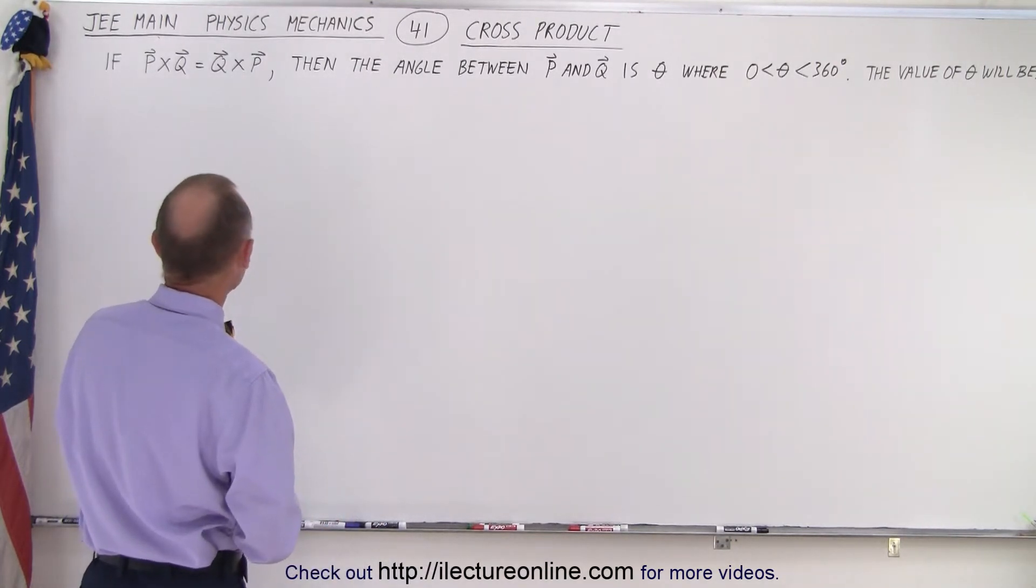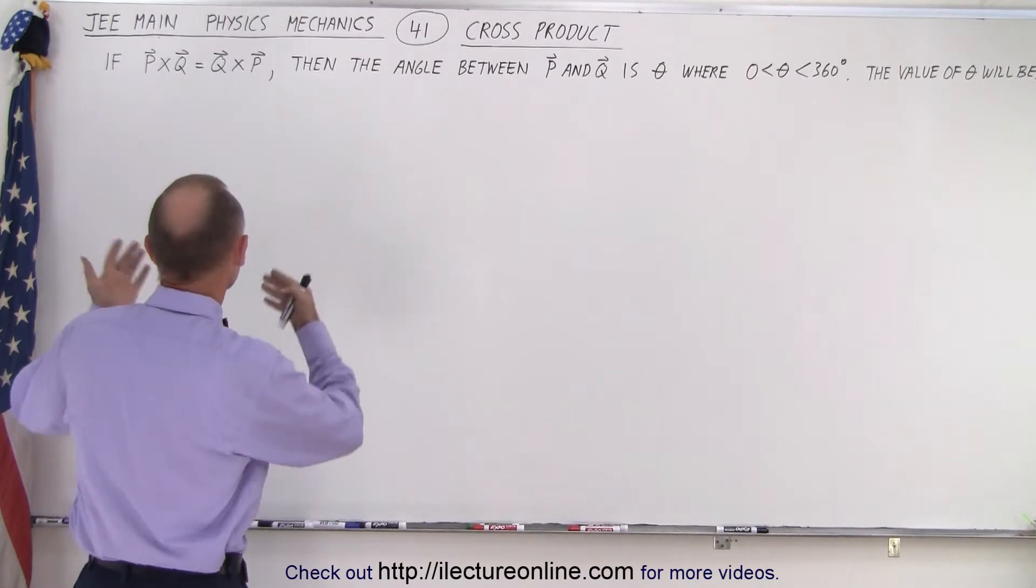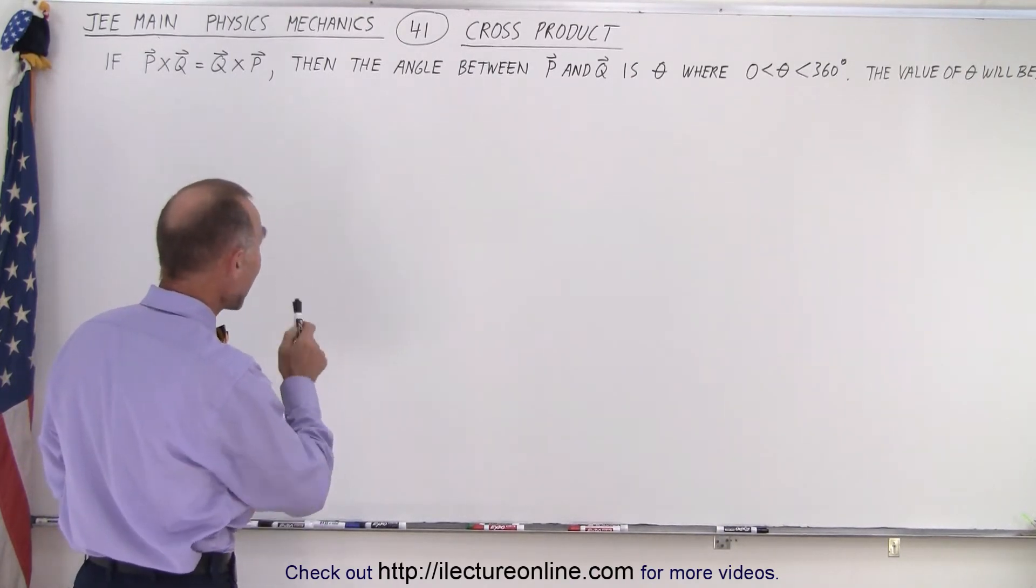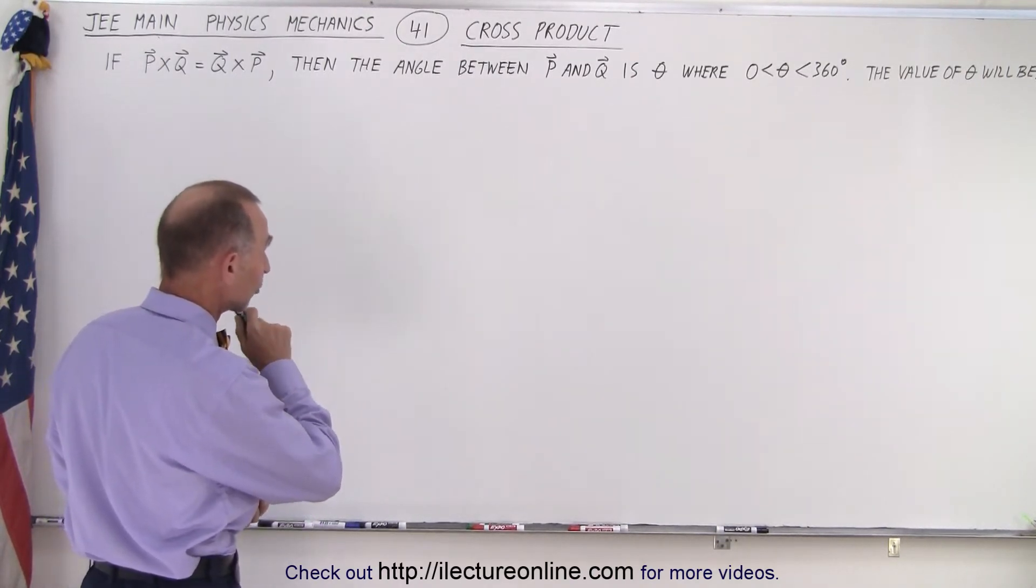All right, they give us the cross product between two vectors, P cross Q, and they tell us that it's equal to Q cross P. Well, if that's the case, then the angle between the two vectors...